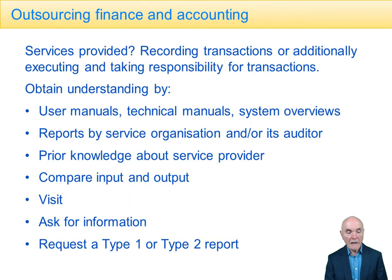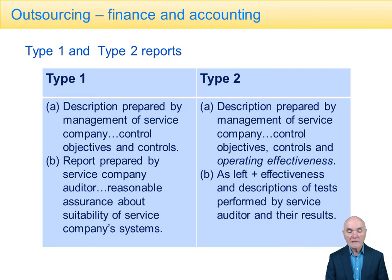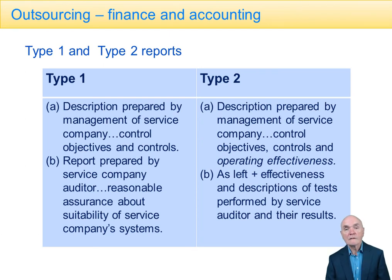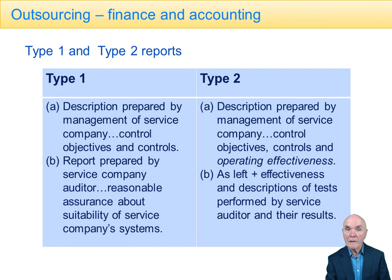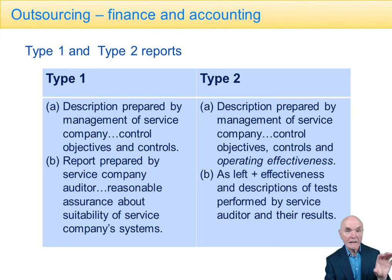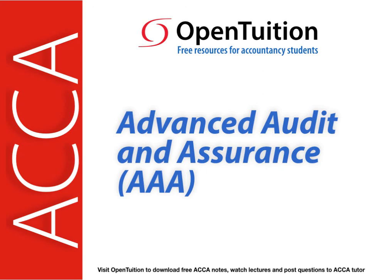Now, if after all these ways of gaining understanding — including obtaining Type 1 or Type 2 reports — you are still not convinced that you have sufficient appropriate audit evidence that your client's records are being processed properly, and therefore cannot say with reasonable assurance that the financial statements are free of material misstatement, then you're going to have to modify your audit opinion. The effect is that you simply don't know — you have insufficient information about what's going on in this third party. It still remains a bit of an obscure black box, and you would have to modify your audit opinion.